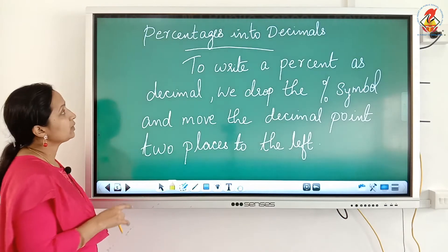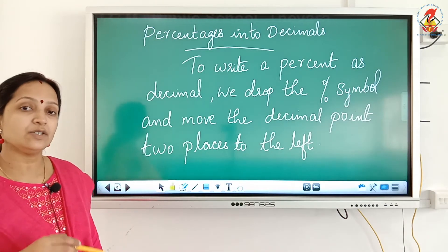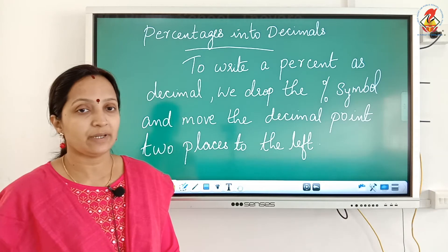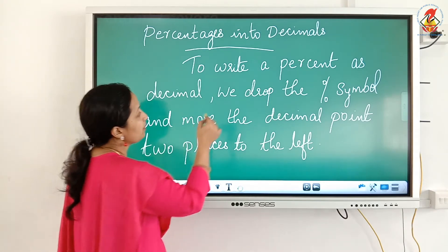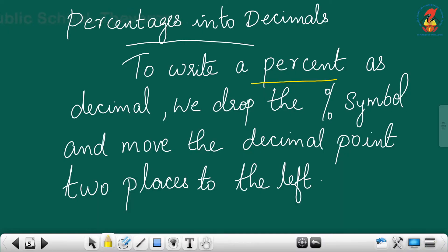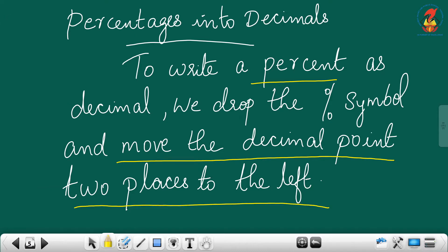In the same way, you can convert percentages into decimals. To write a percent or percentage as a decimal, we drop the percentage sign and move the decimal point 2 places to the left.